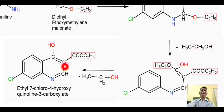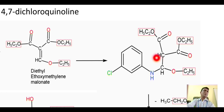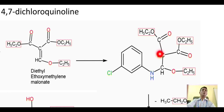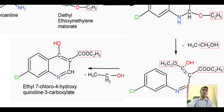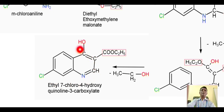The cyclization takes place between this carbon and this carbon which has the hydroxyl group. An important step is that the alpha carbon bearing the hydrogen undergoes hydrogen migration onto the oxygen, as seen in keto-enol tautomerism. This generates the enol portion. In this way we have formation of the compound ethyl 7-chloro-4-hydroxyquinoline-3-carboxylate.